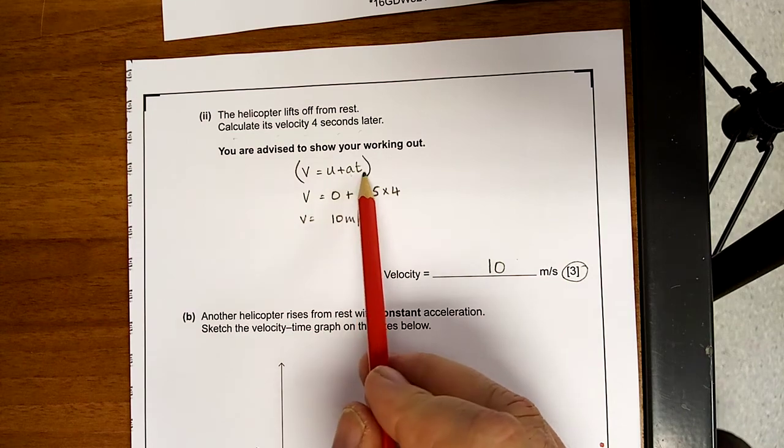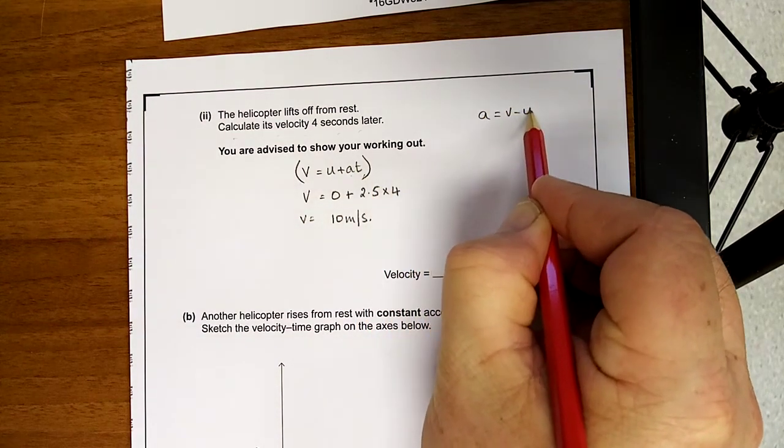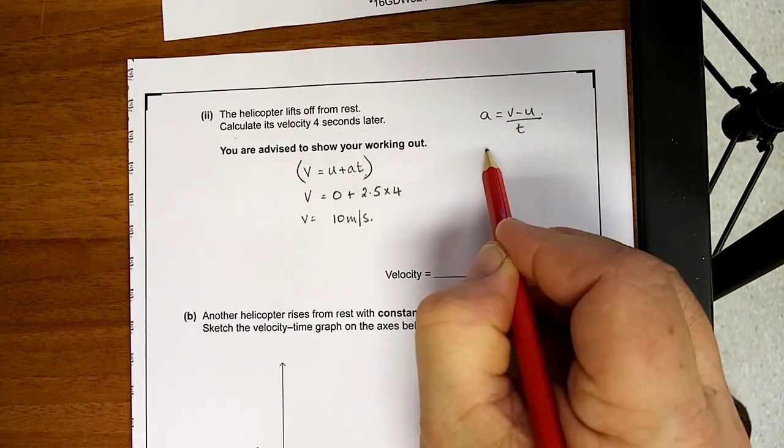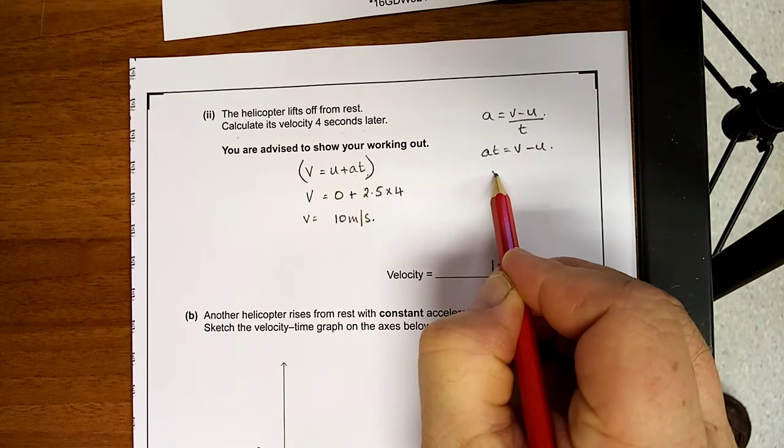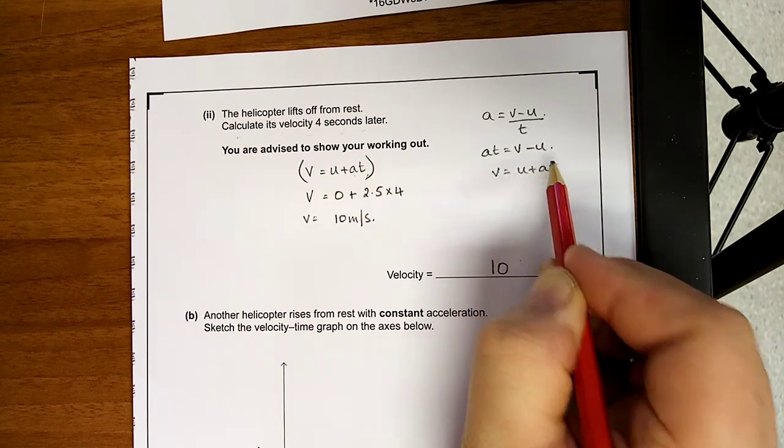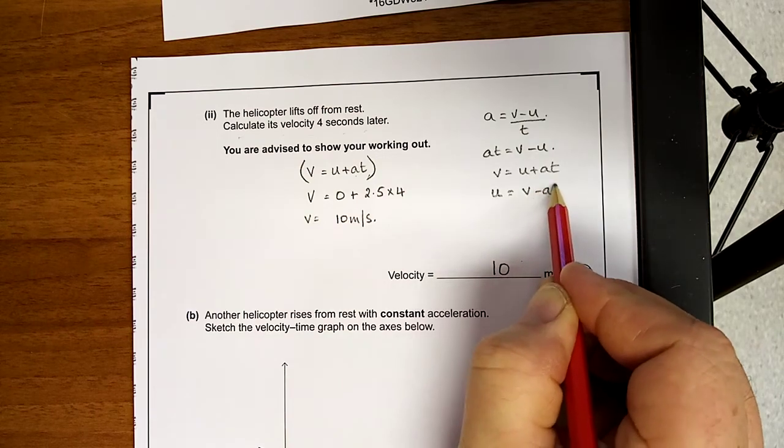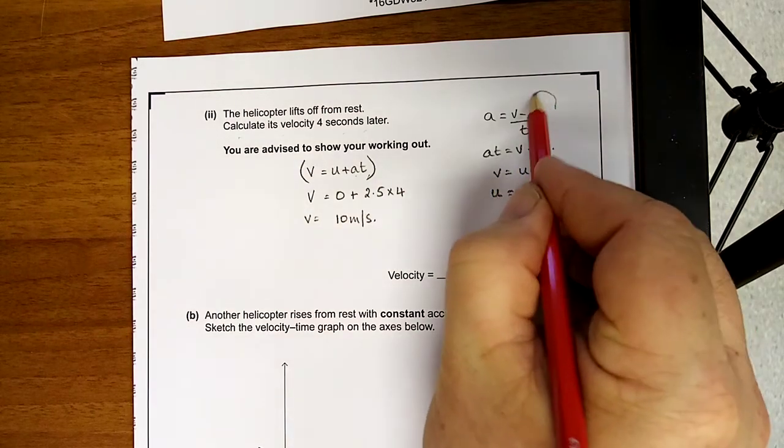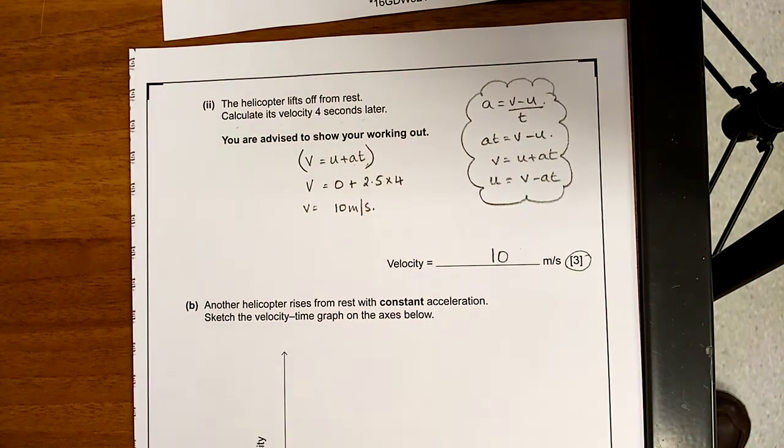See if you don't know that. And remember, where did that equation come from? A equals V minus U over T. AT equals V minus U. V equals U plus AT. U equals V minus AT. Now, you learn to rearrange them, or you learn them off by heart. Whichever way, but you still need to know them.